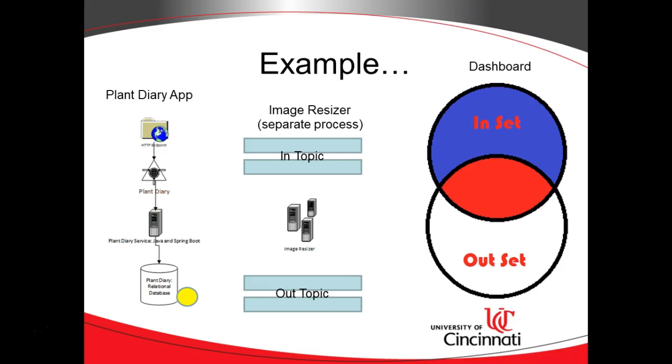A topic means we can add something to it, and multiple programs or multiple processes can subscribe to this topic and can be notified when something is added to the topic. So, we start by uploading an image to the plant diary application, maybe an image of a plant specimen.